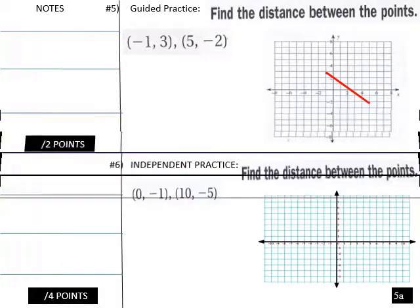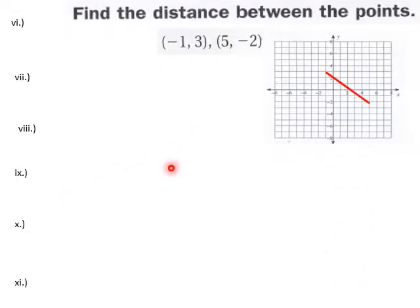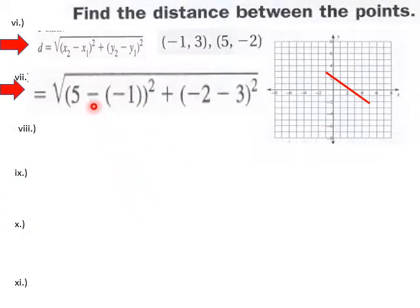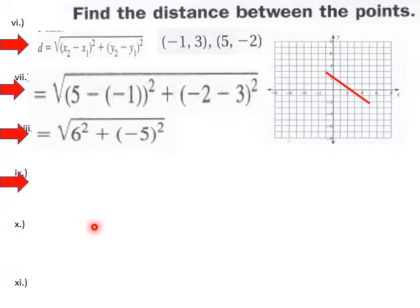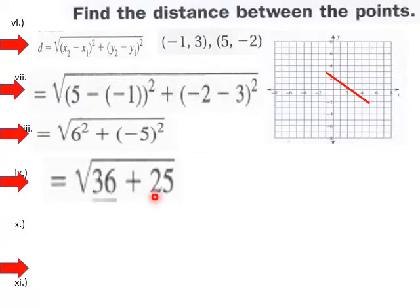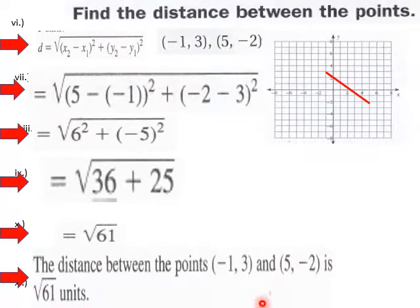To plug that into our distance formula, we have 5 minus negative 1 and negative 2 minus 3. We add those two differences after we square them and get 36 plus 25, which is square root of 61. So the distance here would be the square root of 61.